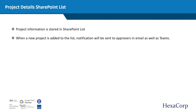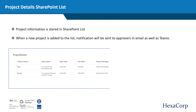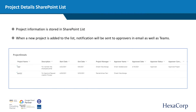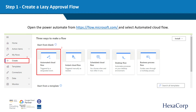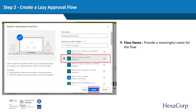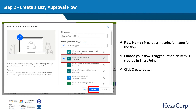Let us consider an example where project details are stored in a SharePoint list and projects have to be approved before users can work on them. Log on to Power Automate and select the Automated Cloud Flow option. Give a meaningful name for the flow and choose the trigger as when an item is created in SharePoint.